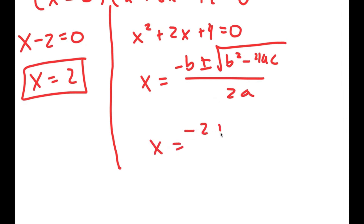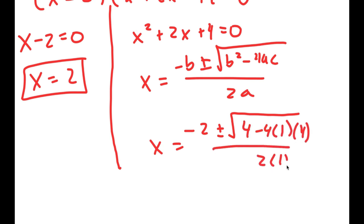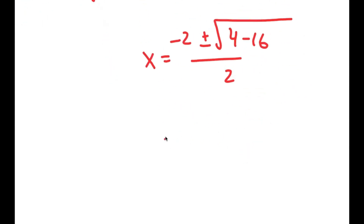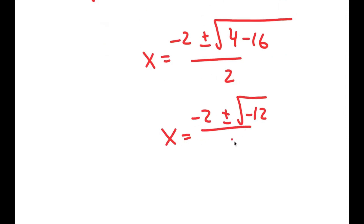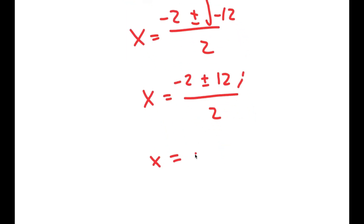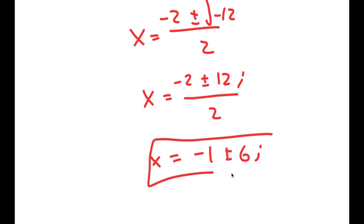Applying the quadratic formula, I get negative 2 plus or minus the square root of 4 minus 4 times 1 times 4, all over 2 times 1. This turns into negative 2 plus or minus the square root of 4 minus 16 over 2, which is negative 2 plus or minus the square root of negative 12 over 2, which simplifies to negative 1 plus or minus i root 3. So these are the two additional solutions to this equation.